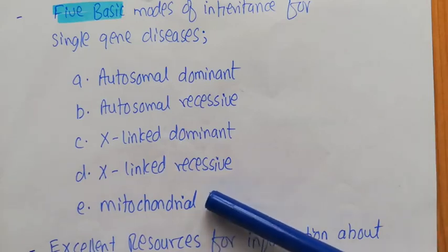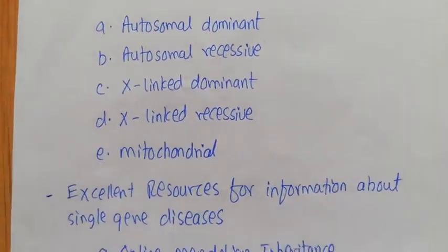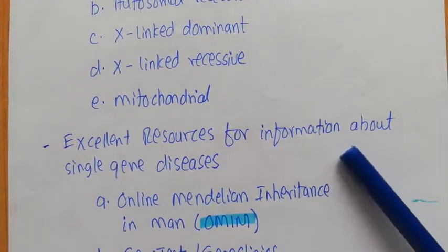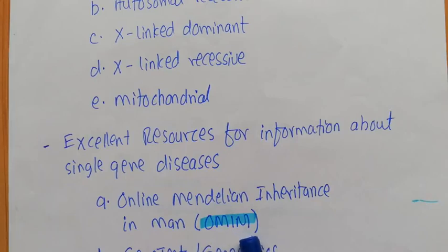The fifth mode is mitochondrial, where the gene causing that particular disease is present on the mitochondria. Two excellent resources for information about single gene diseases are: one, the Online Mendelian Inheritance in Man, known as OMIM, and two, Gene Tests, also known as Gene Clinics. We will continue the discussion in the next video.